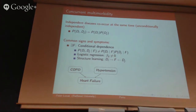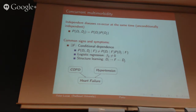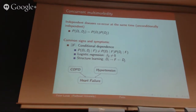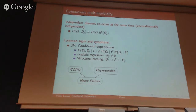But that's not always the case. In another case of concurrent multimorbidity, the diseases may be independent — clearly indicated by the lack of correlation between the two — but if we condition on a particular finding, we actually see that they are dependent. In this case, in the logistic regression equation there is an interaction term. But if you look at the structure, it becomes much clearer: for COPD and hypertension, there's a common effect — heart failure — which really tells you the nature of the interaction.